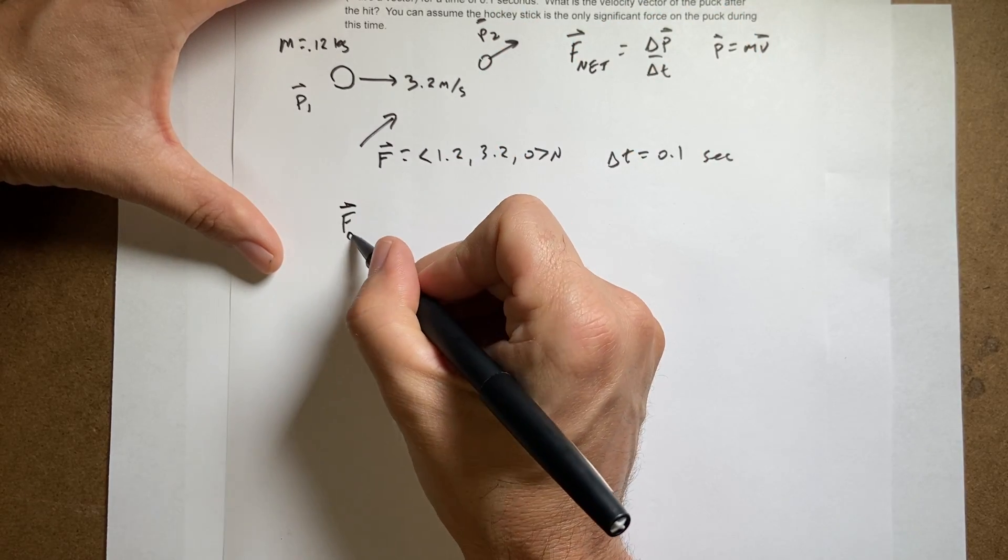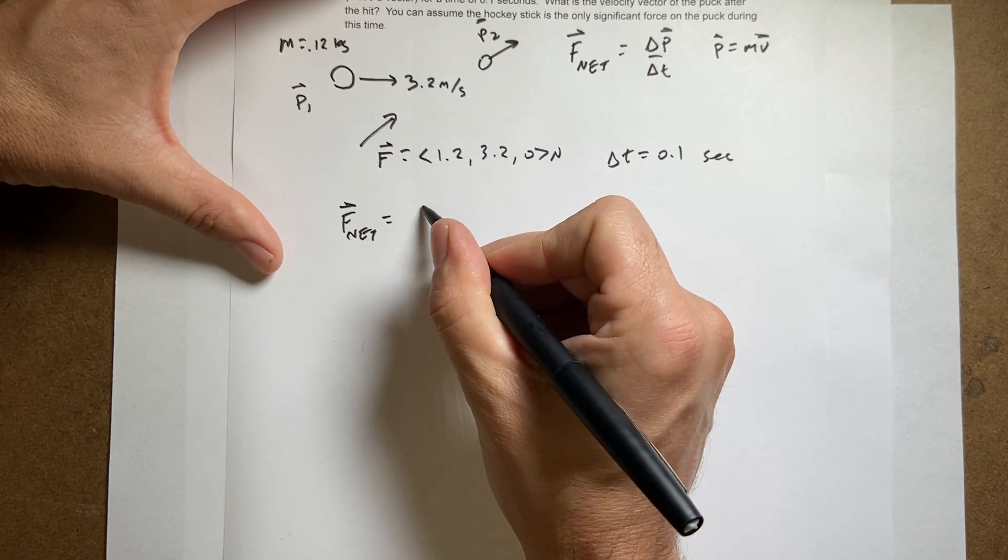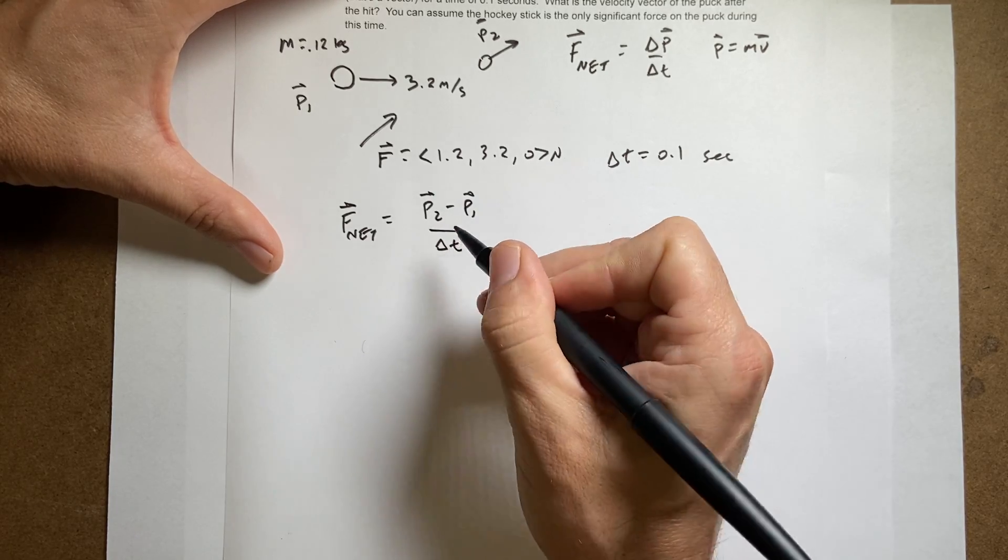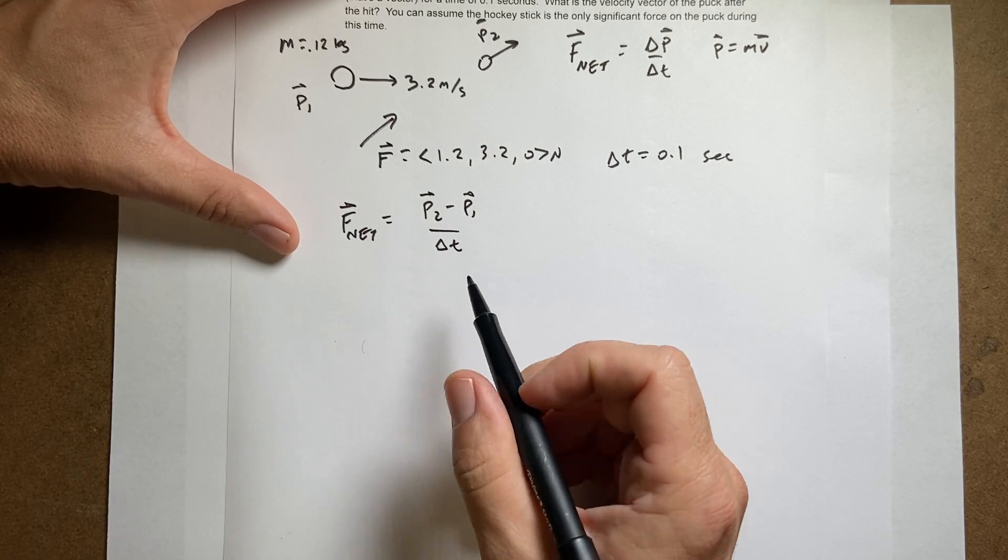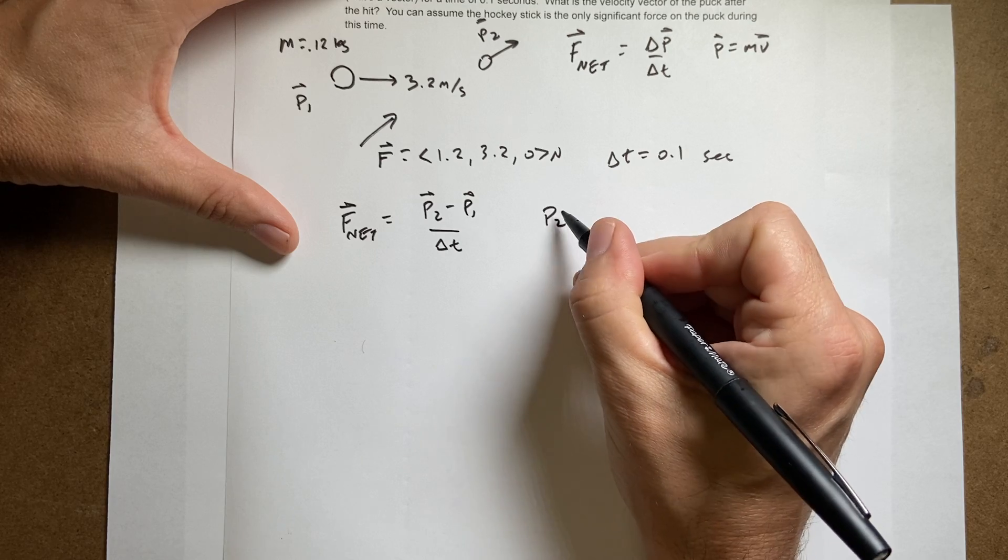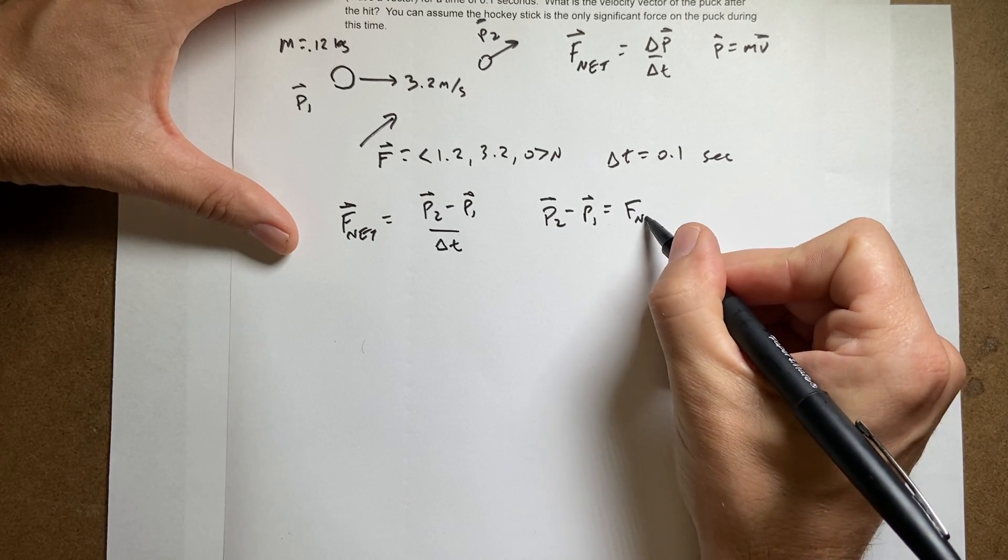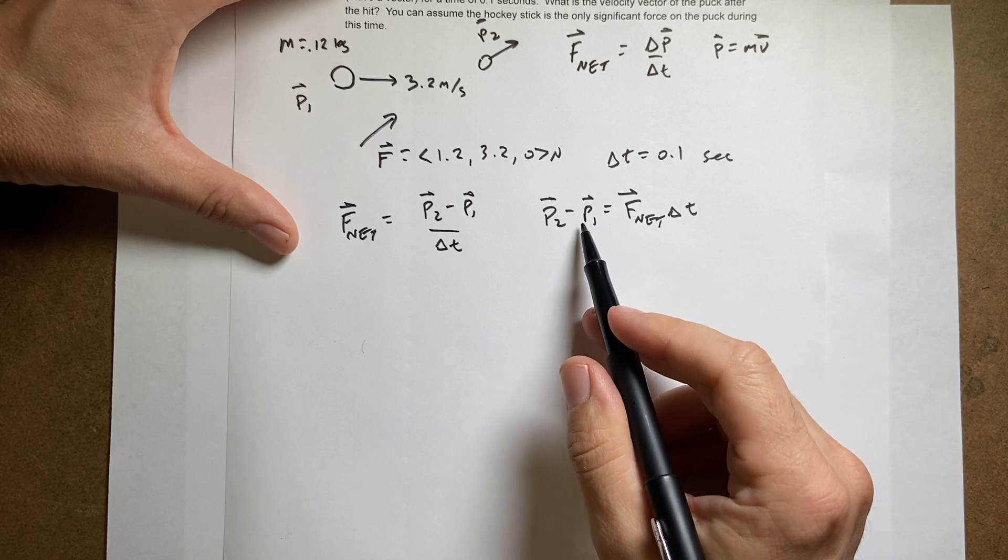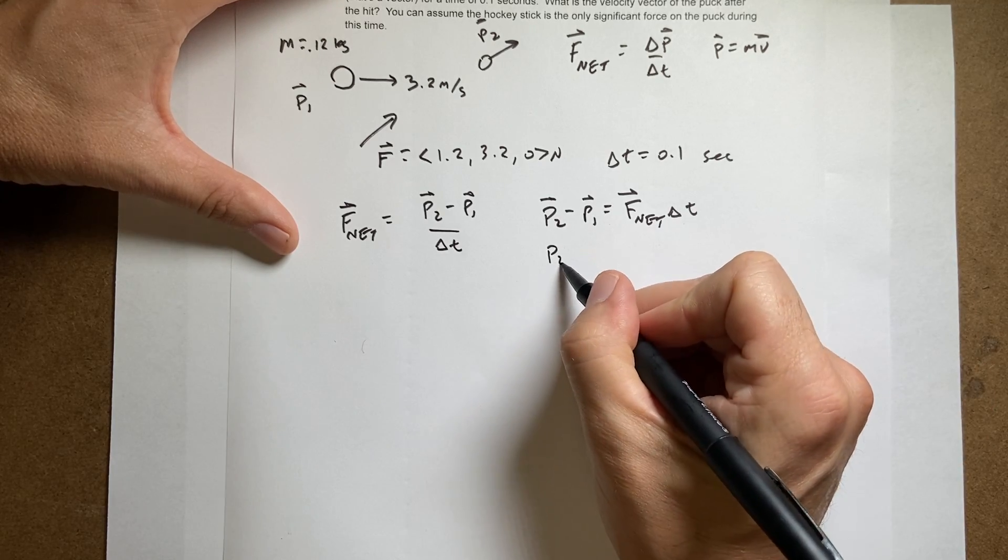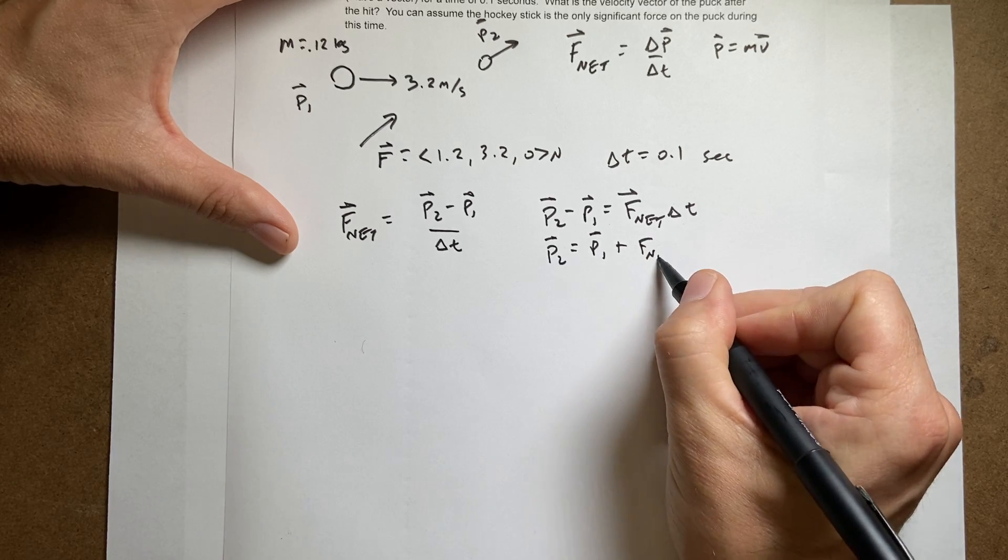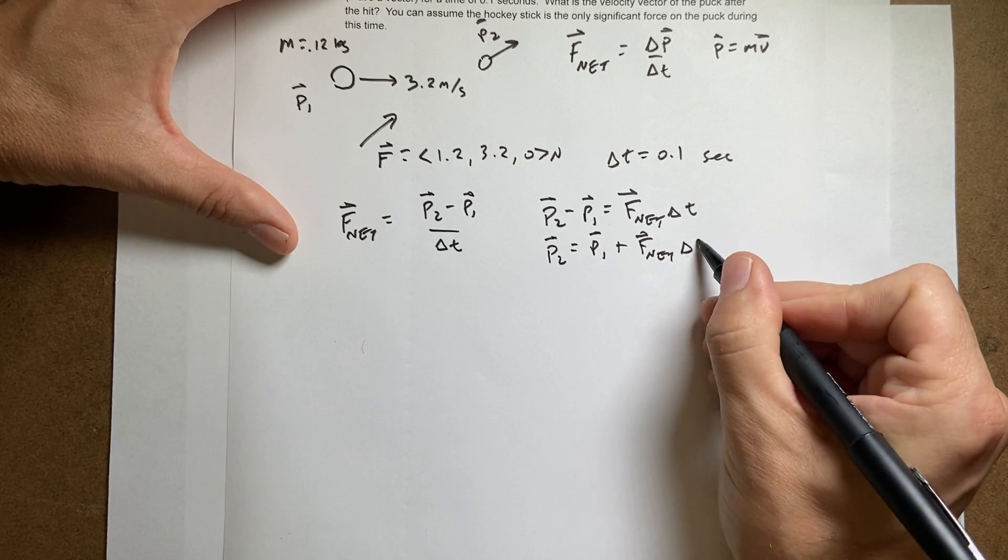So F_net is P2 minus P1 over delta T. Now I multiply both sides by delta T and get P2 minus P1 equals F_net delta T. Now I add P1 to both sides. I get P2 equals P1 plus F_net delta T.